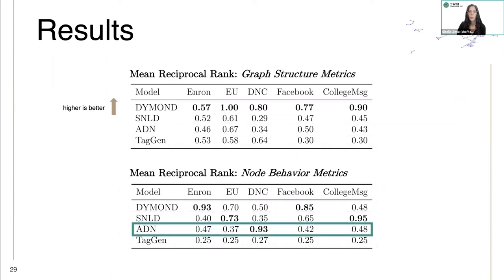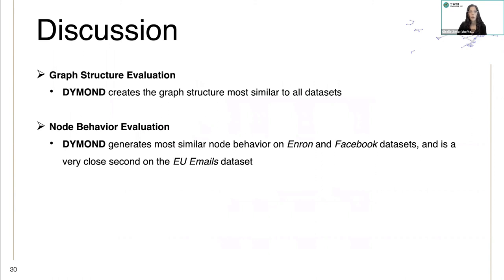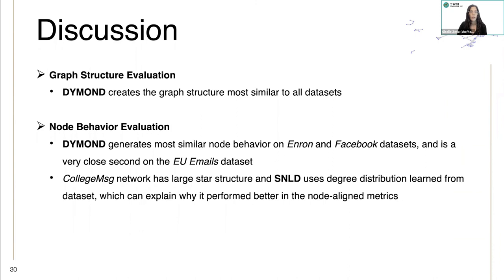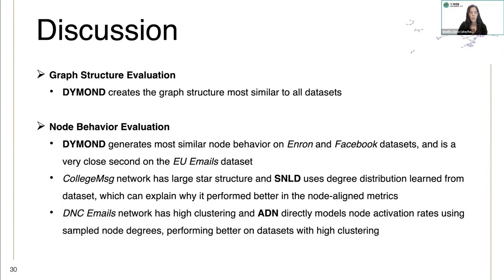ADN performs better on the DNC emails data set. In our graph structure evaluation, Diamond creates the graph structure most similar to all data sets. In our evaluation of node behavior, Diamond can generate the most similar on the Enron and Facebook data sets, and it's also a very close second on the EU emails data set. The college message network has large star structure, and since SNLD uses degree distribution learned from the data set, this can explain why it performed better in the node aligned metrics. The DNC emails network has high clustering, and the ADN baseline directly models node activation rates using sample node degrees, and so it performs better on data sets with high clustering.